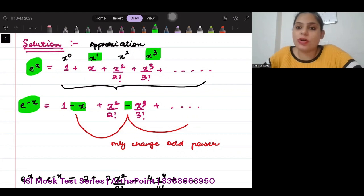Now, here is what is interesting. If I add these two equations together, e to the power x and e to the power minus x, what is going to happen? These odd places would simply cancel out each other.